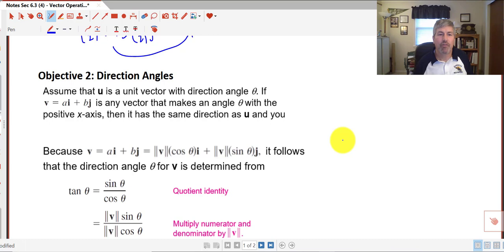In objective 2, we're going to look at direction angles. So assuming that u is a unit vector with a direction angle of theta. Now remember, equivalent vectors had the same magnitude and direction, and to find direction, we used the slope. So if our vector ai plus bj is any vector that makes an angle theta with the positive x-axis, then it has the same direction as u.